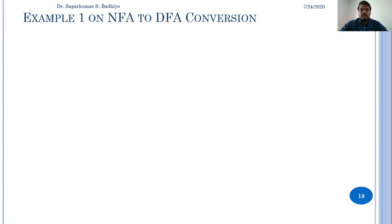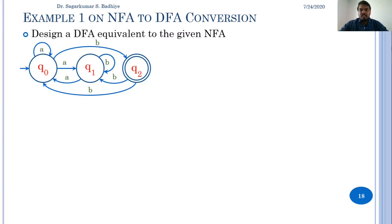Good morning and welcome back to the next video on Theory of Computation. In this video we are going to learn how to convert an NFA to an equivalent DFA. For that we'll consider the given example — we have to design a DFA equivalent to the given NFA, which is represented by this transition diagram. The first step to convert an NFA to a DFA is to obtain the transition table for the NFA if it is given in the form of a transition diagram.